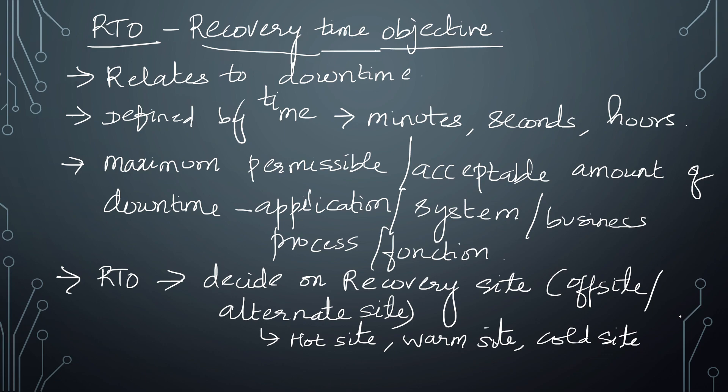These three site types define the level of capacity, functions, or operations available. A hot site is fully equipped with all equipment similar to your original data center — a mirror-type center at the alternate site. A warm site does not have full functionality; the basic infrastructure is available but not all resources. A cold site provides the space and platform where you can carry on operations. For a very critical business process, you have a hot site; for less critical processes, you use a warm or cold site.